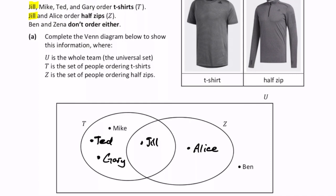Ben and Zena are on the outside. They're not inside the circles. They are part of the group, but they go here.